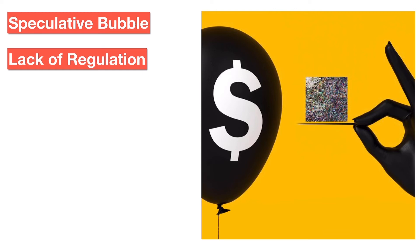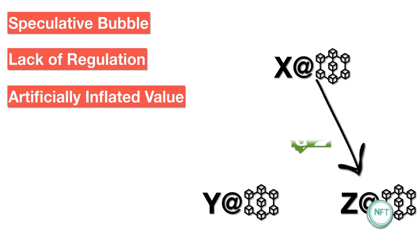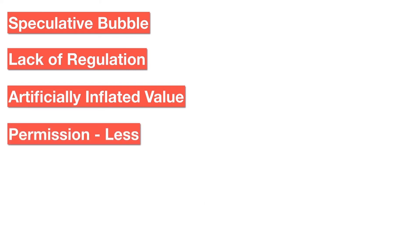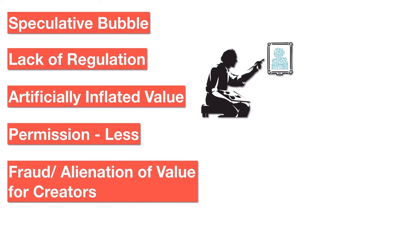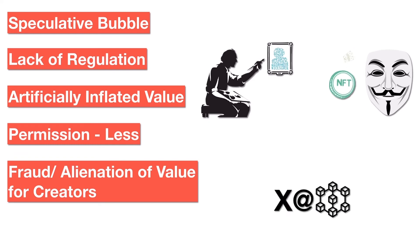This decentralized nature has led to some unethical practices. The value of some crypto assets has been found to be artificially inflated, with bad actors making a windfall profit by selling the NFT at an over-inflated price. NFTs also follow a permissionless protocol, meaning you don't need the creator's permission to attach an NFT to a digital asset and sell it. This has led to instances of fraud and has also alienated creators from the value of their artwork.